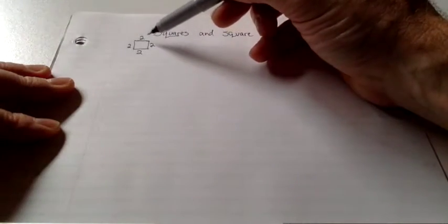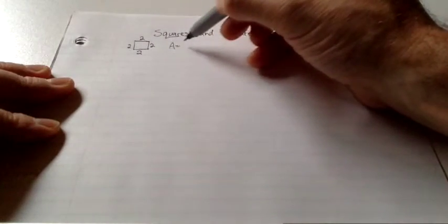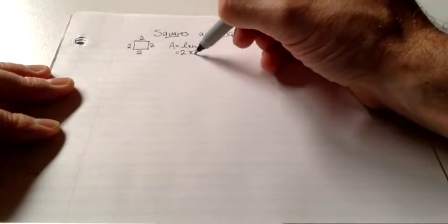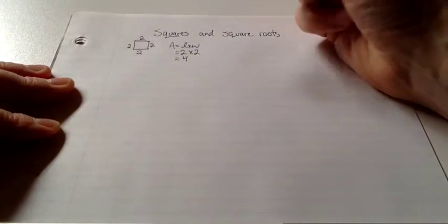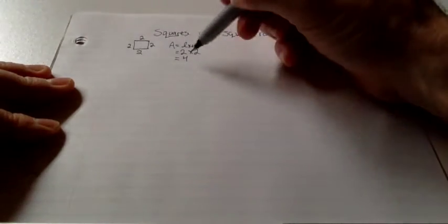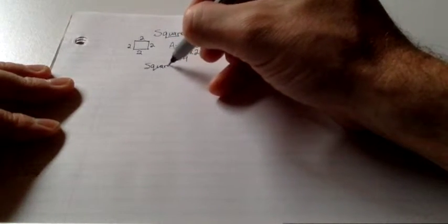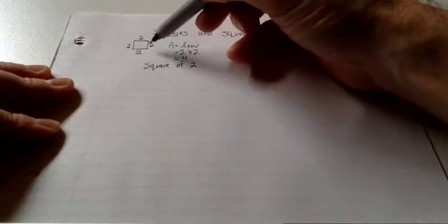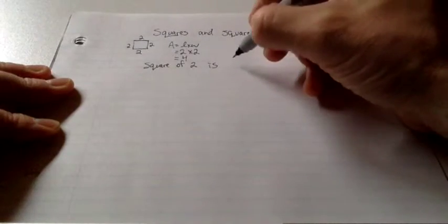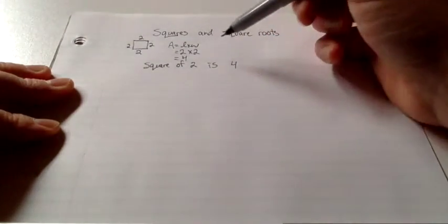So if the side is 2 by 2 by 2 by 2, in order to find the area, it's the length times the width, which is 2 times 2, which is 4. Now, when we're thinking about the idea of square, we would say that the square of 2, in other words, a square with the sides of each 2, is 4. And we get that through this equation here.